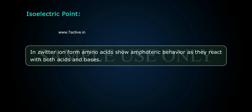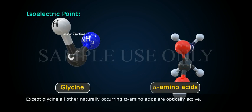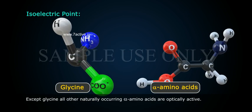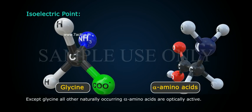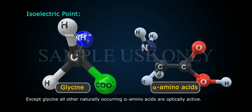In zwitterion form, amino acids show amphoteric behavior, as they react with both acids and bases. Except glycine, all other naturally occurring alpha amino acids are optically active.